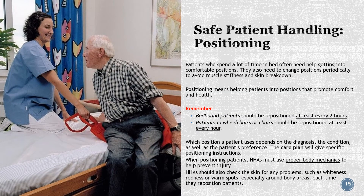Safe patient handling and positioning: patients who spend a lot of time in bed often need help getting into comfortable positions and need to change positions periodically to avoid muscle stiffness and skin breakdown. Positioning means helping patients into positions that promote comfort and health. Bed-bound patients should be repositioned at least every two hours; patients in wheelchairs or chairs should be repositioned at least every hour. Which position a patient uses depends on the diagnosis, condition, and patient preference — the care plan will give specific positioning instructions. HHAs must use proper body mechanics and should check the skin for whiteness, redness, or warm spots around bony areas each time they reposition patients.